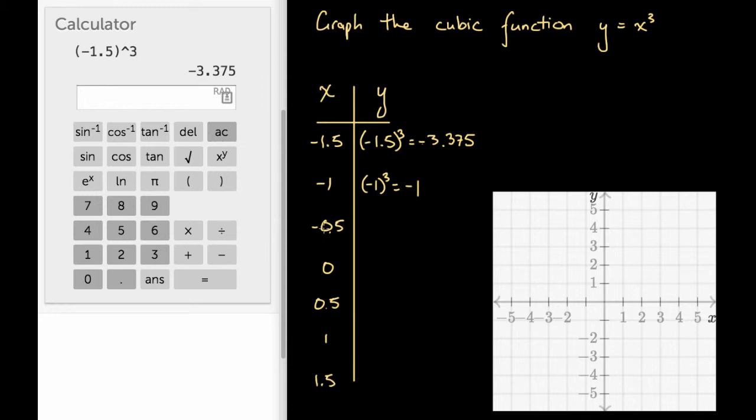Let's have a look at negative 0.5. The y value here is going to be minus 0.5 all cubed. Again, let's go to our calculator to figure out what that's going to be.